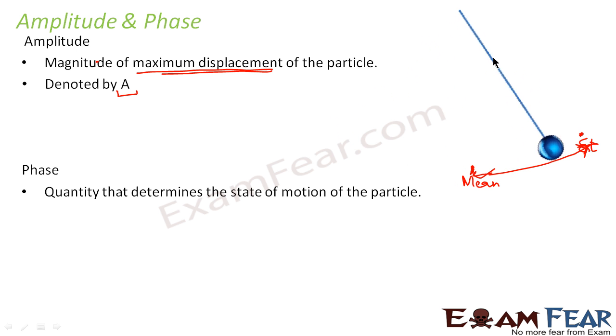so this angle will also define the position of the particle. So the quantity other than this amplitude which determines the state of motion of the particle is known as phase.